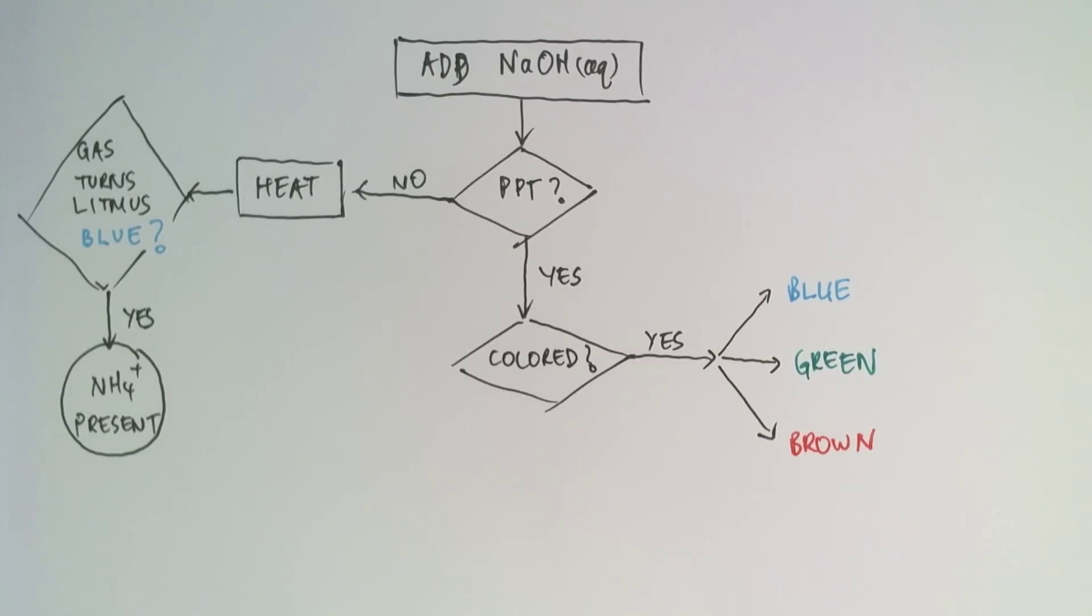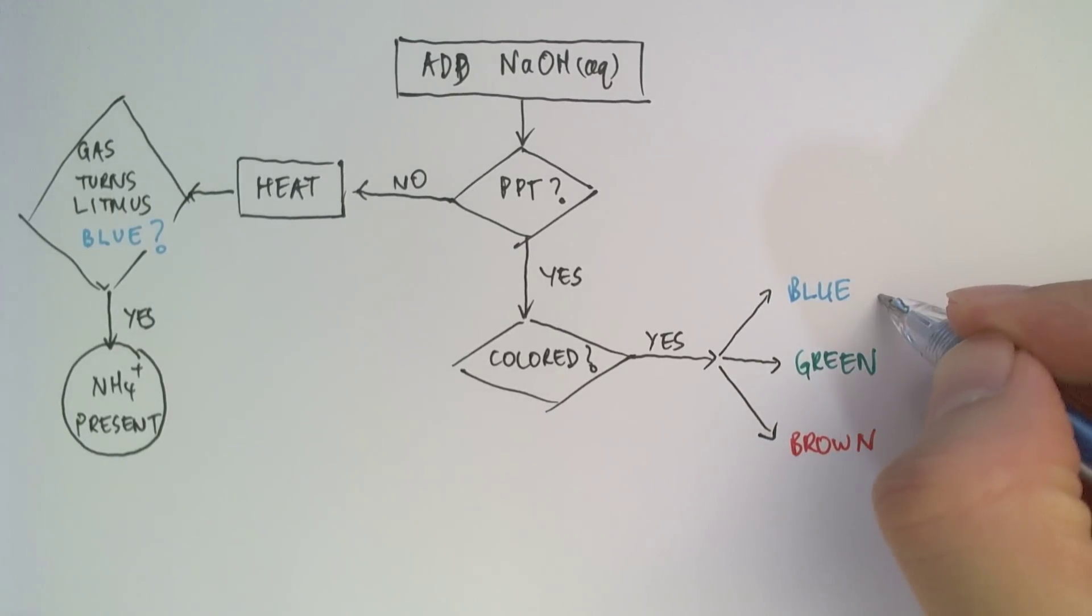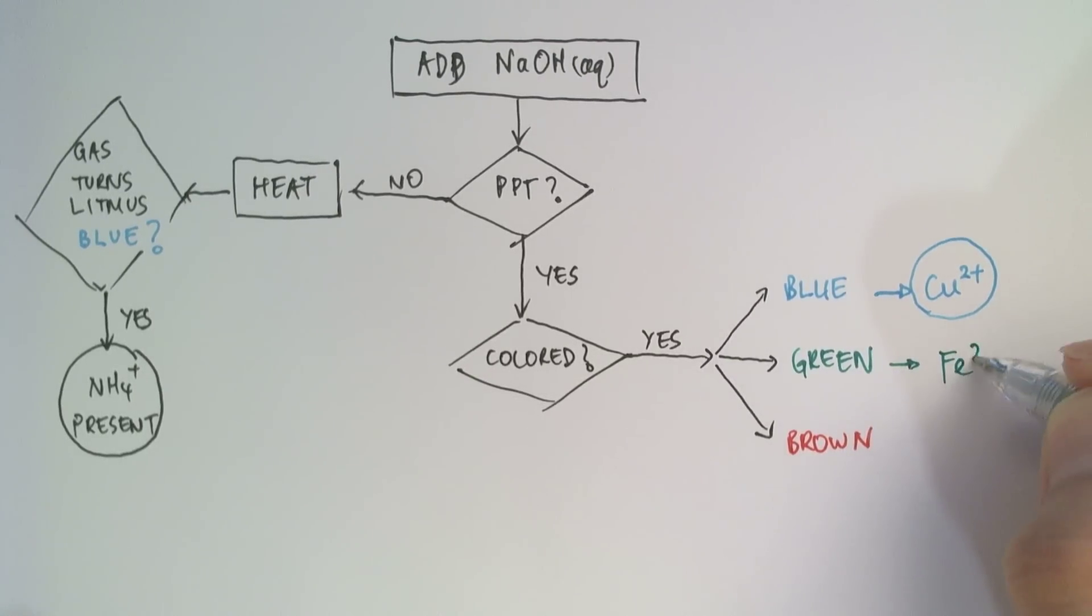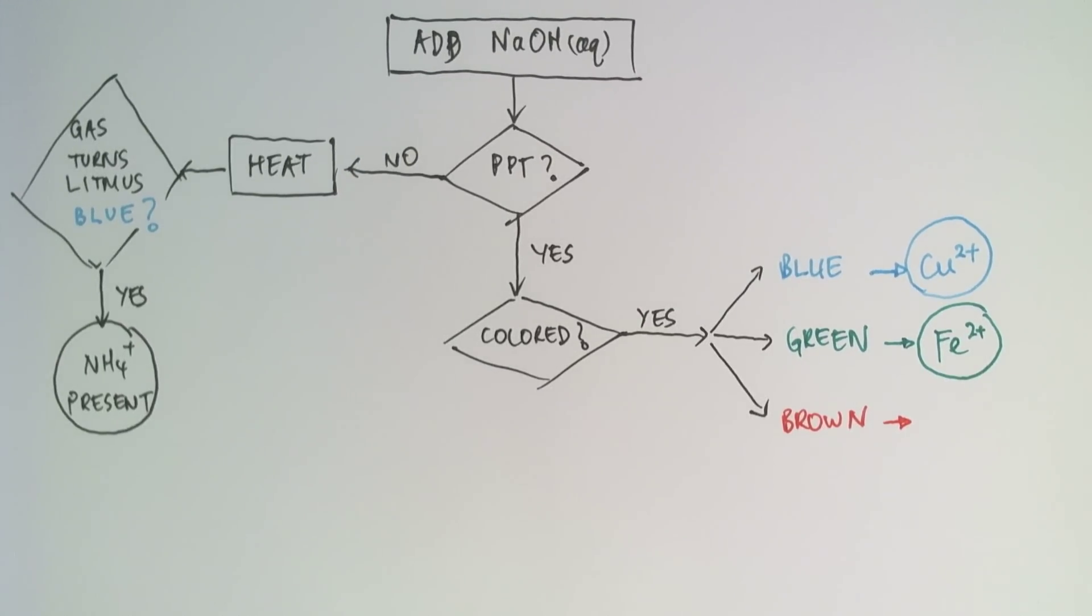If the precipitate is blue, then that means that Cu2+ is present. If it's green, that indicates the presence of iron 2 plus. Again, if you are interested in the equations that show the formation of these hydroxide complexes of these ions, you can take a look at the previous video where we discussed in detail the reactions taking place between these ions and the sodium hydroxide solution. And if it's brown, that indicates the presence of iron 3 plus ions.